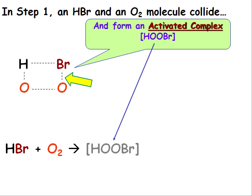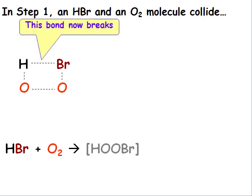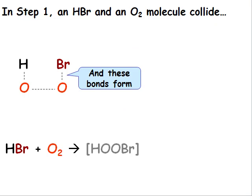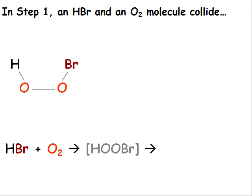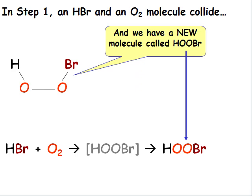Bonds in an activated complex are often shown as dashed lines, and the formula is surrounded by square brackets. This bond now breaks and these new bonds form. And now we have a new molecule called HOOBR.